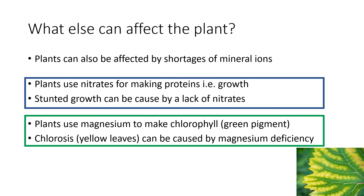What else can affect a plant? Plants aren't just affected by diseases — they can also be affected by a shortage of mineral ions. There are two specific minerals to know. Plants use nitrates for making proteins, which they use for growth; a shortage of nitrate ions leads to stunted growth. If a plant has yellow leaves, that's normally due to a lack of chlorophyll, which is associated with a lack of magnesium. By looking at the plant's characteristics, we can indicate which mineral ion may be missing.